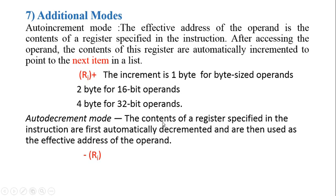Next is about auto-decrement mode. The decremented register value is then used as the effective address of the operand. So in order to get the effective address of the operand, before accessing the effective address, we want to automatically decrement the register value.